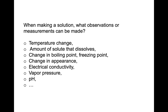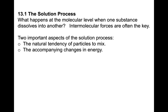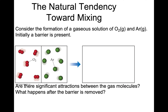This is something where we see the different ideas that the class has. Here are different examples of the kinds of observations we can have when making or describing a solution. Now we're going to begin to look more closely at what's taking place with the solution — what takes place during the process. Looking first at the tendency towards mixing, a couple of leading questions: Are there significant attractions between gas molecules? And what would happen after the barrier is removed? So I have gas particles on each side.